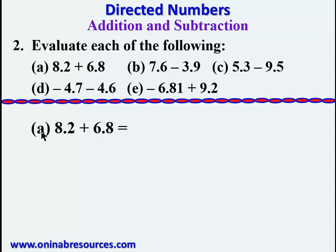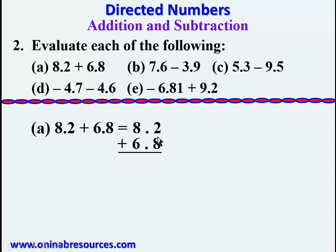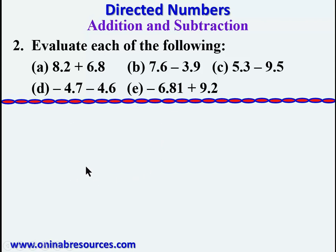Starting with part a: 8.2 plus 6.8. We do this in tabular form. Taking it digit by digit: 2 plus 8 gives 10, write 0 and carry 1. Place the decimal point. Then 1 plus 8 gives 9, plus 6 gives 15. So 8.2 plus 6.8 gives 15.0.